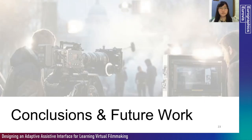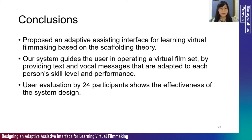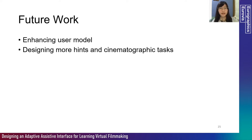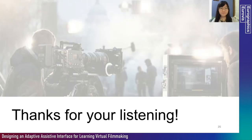In conclusion, we propose an adaptive assisting interface for learning virtual filmmaking based on scaffolding theory. Our system guides users operating a virtual film set by providing text and vocal messages adapted to each person's skill level and performance. Evaluation by 24 participants shows the effectiveness of our system design. Future work will enhance user models — currently three simple models — by adding more models and parameters from different aspects to provide more suitable lessons, and design more hints and cinematography tests to better assist users in getting familiar with virtual filmmaking.